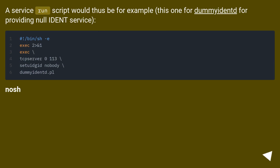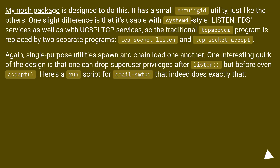A service run script would thus be, for example, one for dummyidentd for providing null ident service. The NOSH package is designed to do this. It has a small setuidgid utility, just like the others. One slight difference is that it's usable with systemd SD_LISTEN_FDS services as well as with UCSPI-TCP services, so the traditional tcpserver program is replaced by two separate programs: tcp-socket-listen and tcp-socket-accept. Single-purpose utilities spawn and chain-load one another.